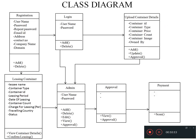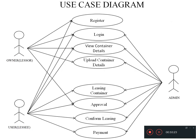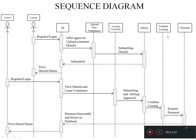This is the class diagram for my application. This is the use case diagram for my application. The owner, who is the lessor, has to register first, then log in. They can view and upload the container details with admin approval. The lessee, who is the user, can lease the container, get approval from the admin, confirm their leasing, and do the payments using the admin's approval. This is the sequence diagram for my application.